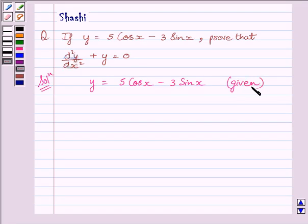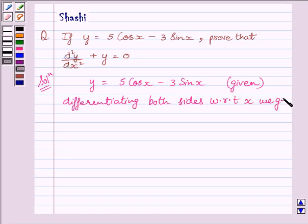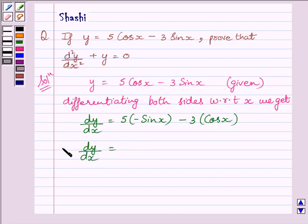Now, differentiating both sides with respect to x, we get dy upon dx is equal to 5 multiplied by minus sin x minus 3 multiplied by cos x. So, we get dy upon dx is equal to minus 5 sin x minus 3 cos x.